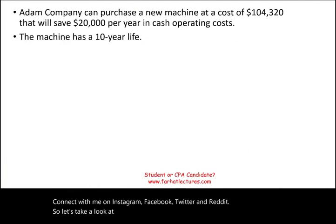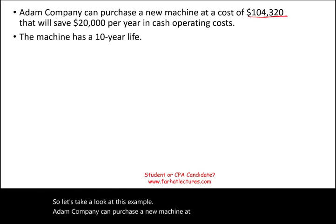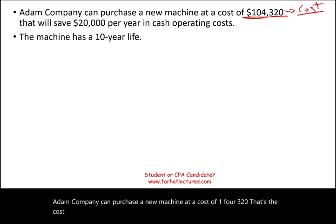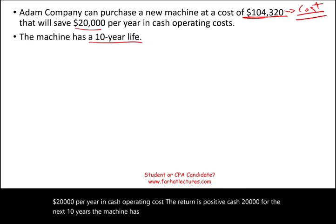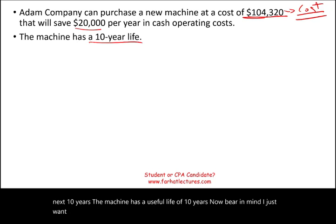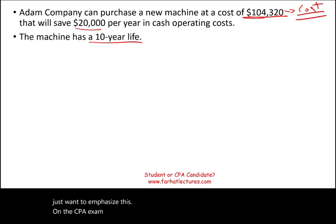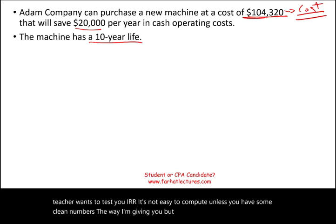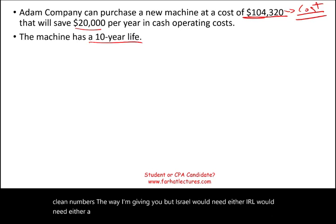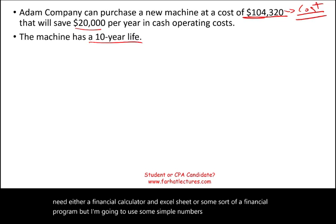Let's take a look at this example. Atom Company can purchase a new machine at a cost of $104,320 — that's the initial investment, and it's today. That will save $20,000 per year in cash operating costs for the next 10 years. The machine has a useful life of 10 years. IRR is not easy to compute unless you have clean numbers. IRR would need either a financial calculator, an Excel sheet, or some sort of financial program. But I'm going to use simple numbers to illustrate the point.